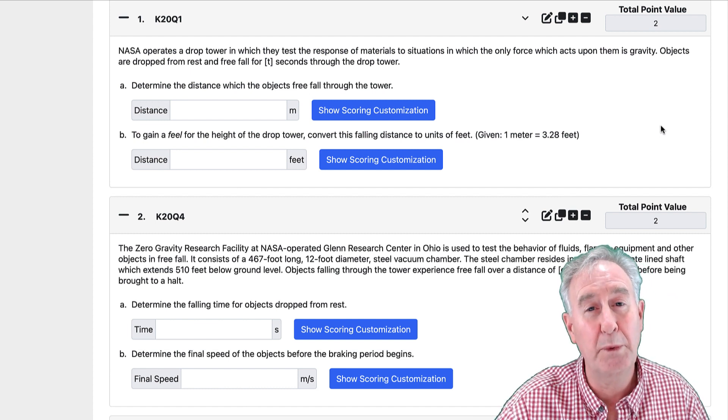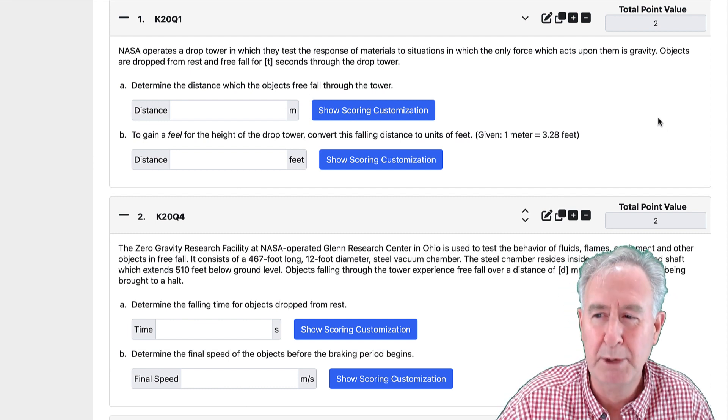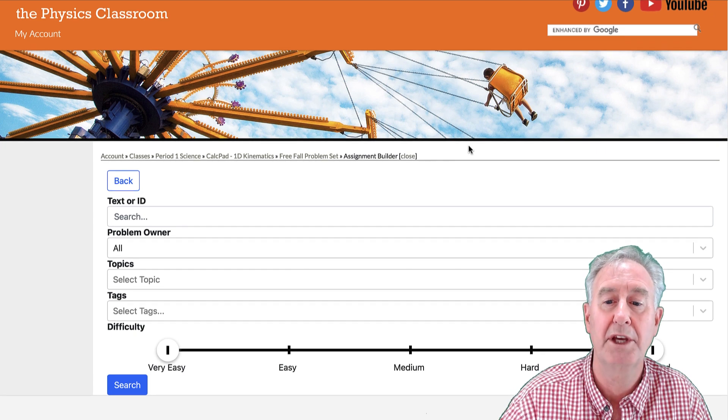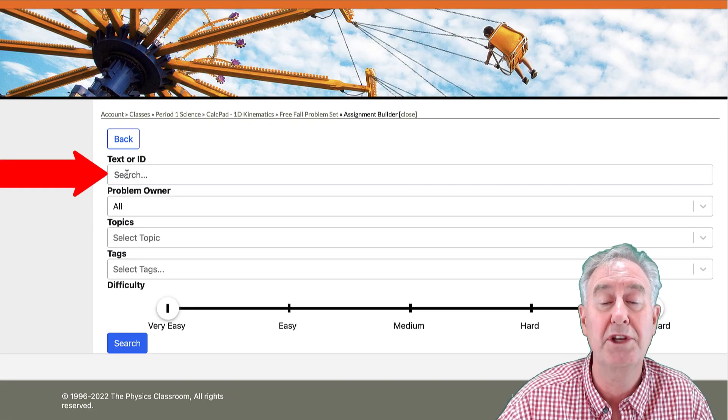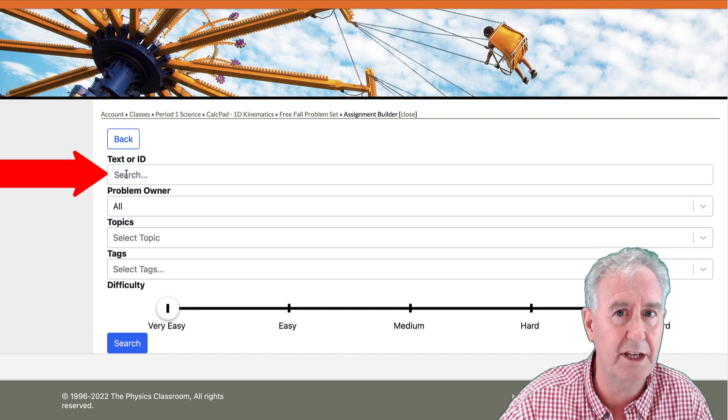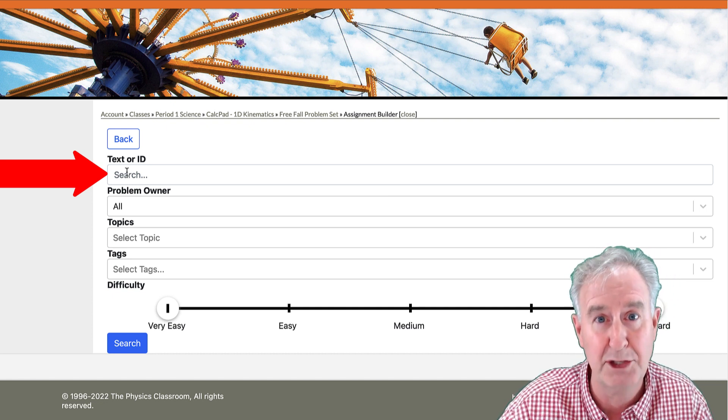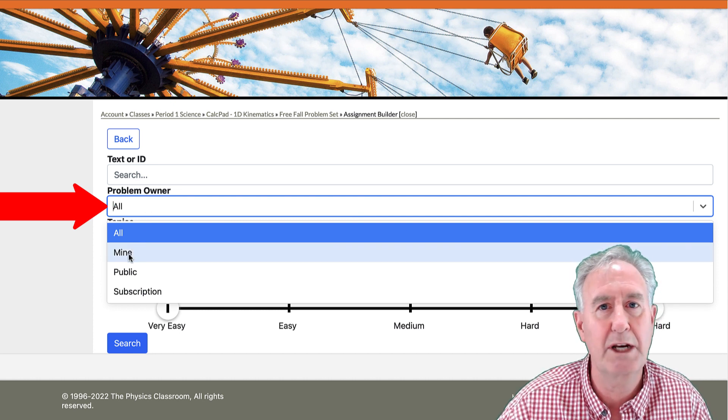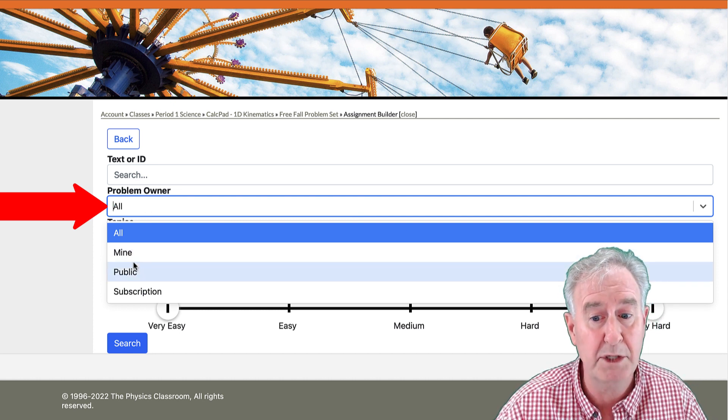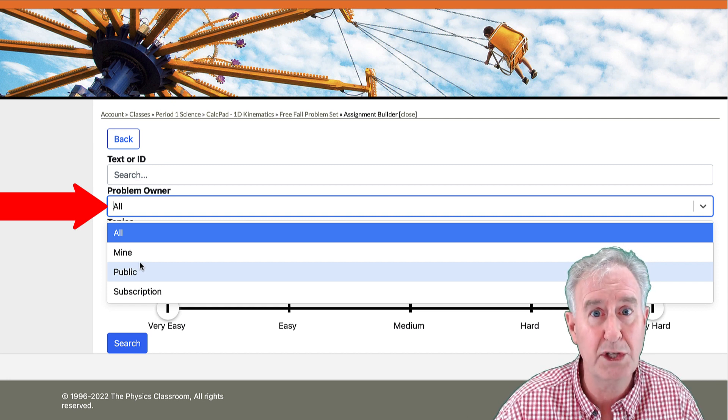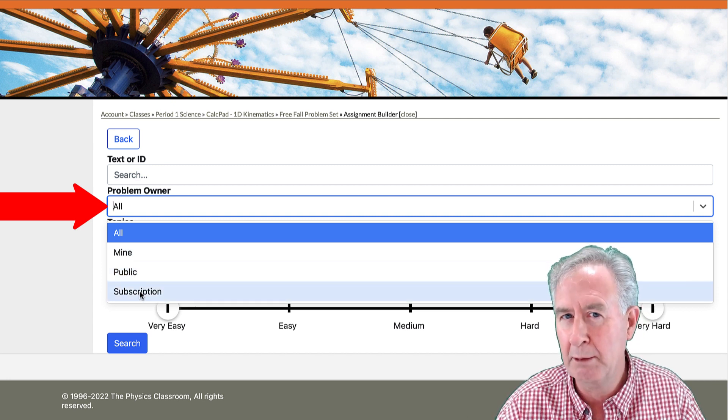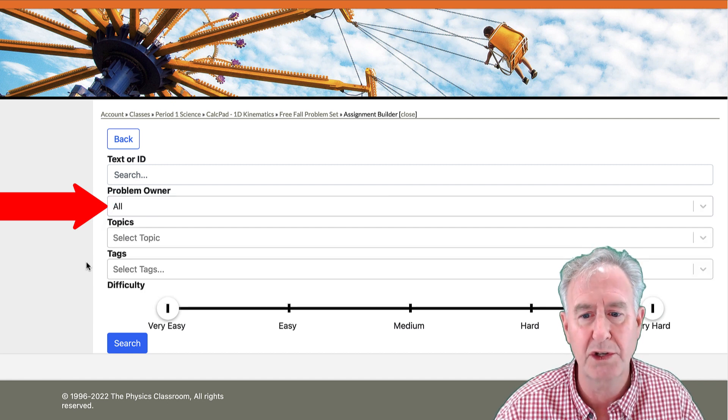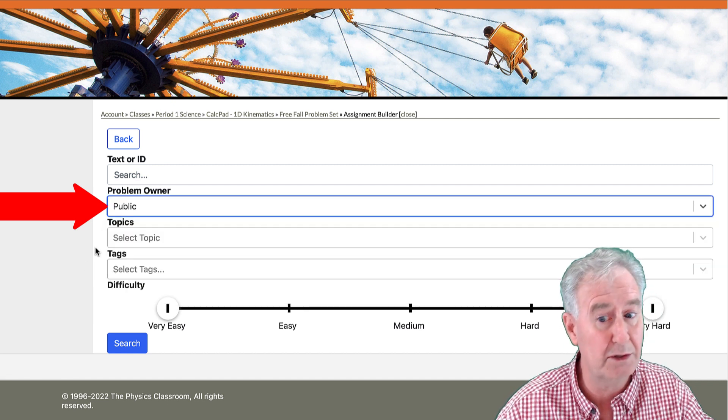I want to finish up by discussing other ways to find problems for your customized CalcPad problem set. So I'm going to click on a plus button to add a problem and select existing problems. Here's our little search area of CalcPad. I've been using this text field where I type in some text, mainly the name, and it looks for any problem that matches what I type into the text field. But the problem owner field is I could search for any problem that I've written that I own, my problems. Public problems mean those belonging to the physics classroom or those of other people in my subscription, other teachers in my subscription. So that's another way you can narrow or widen your search. I'm going to pick public, just the physics classroom.